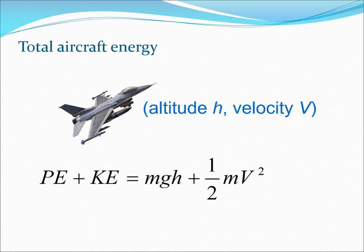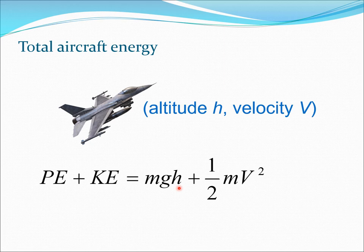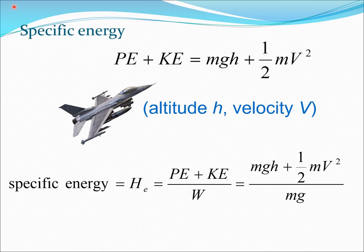In accelerated climb, we look at the energy aspects of the aircraft. Assume the aircraft is flying at altitude h and velocity v. From basic physics, the total energy is potential energy (PE) plus kinetic energy (KE), where PE equals mgh and KE equals one-half mv squared. This is the total energy of the aircraft in flight.